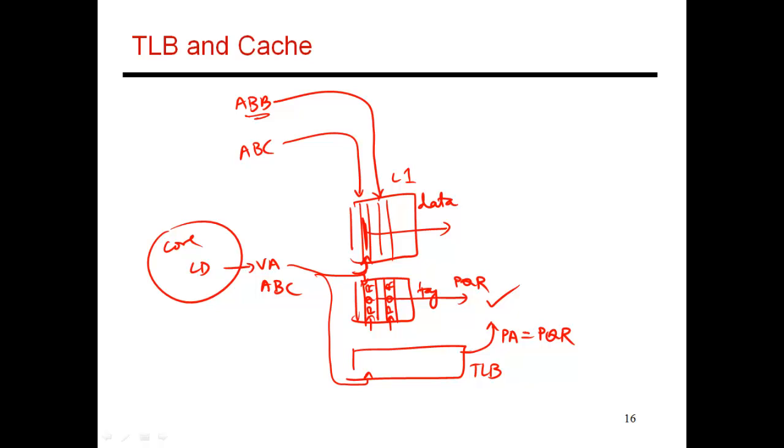So again, this is not going to work. So the only way that this organization is going to work is if ABC and ABB both map to the exact same set. If they map to different sets, then again, you'll have a problem where you create two cache copies for one physical address. So we have to somehow force both of these different virtual addresses to map to the same set. And thankfully, this is not as hard as you might initially think.